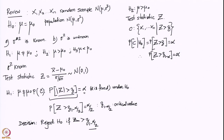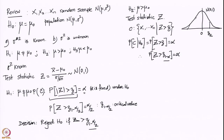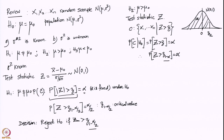To clarify the notation: for a standard normal distribution, z subscript a is defined such that the probability to the right of that value equals a. So if we want this tail probability to be alpha, then a must be 1 minus alpha — which is why we use z subscript (1 minus alpha) for the one-sided case and z subscript (1 minus alpha/2) for the two-sided case.